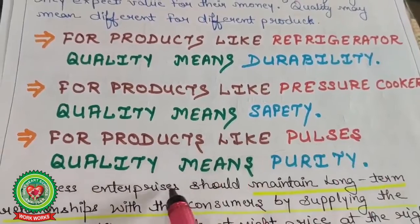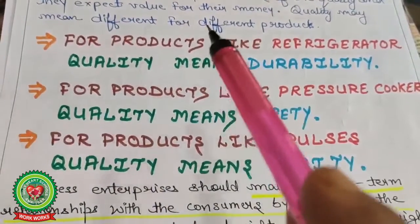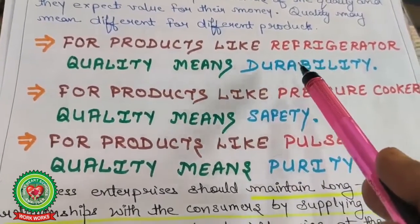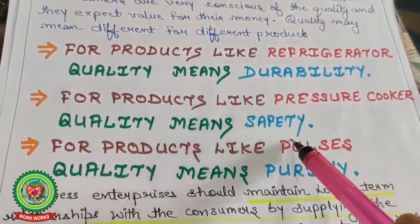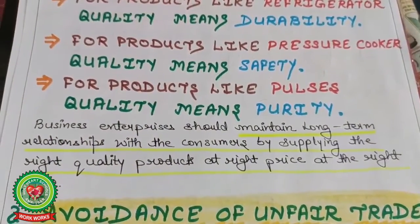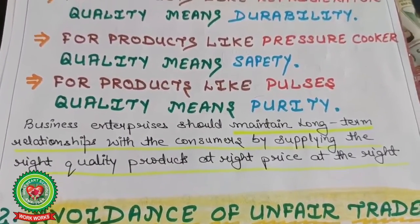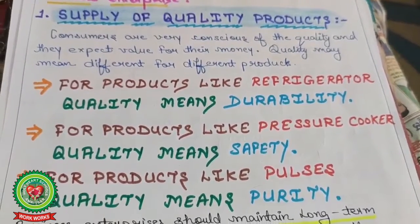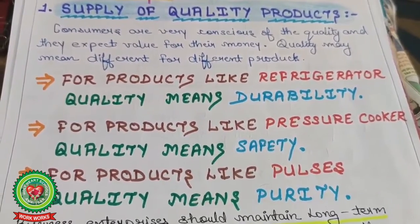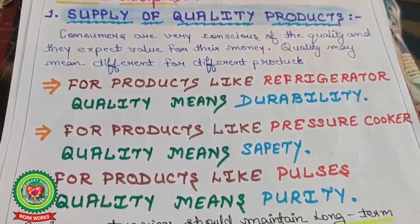For pulses, quality means purity. So different products require different quality as per consumer needs — it totally depends on the nature of the product. Refrigerator: durability. Pressure cooker: safety. Pulses: purity. Business enterprise should maintain long-term relations with consumers by supplying the right quality products at the right places at the right time, so that the consumer, after satisfaction, purchases the same product again and again.